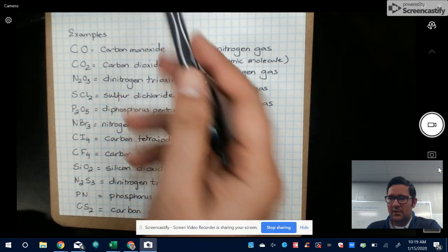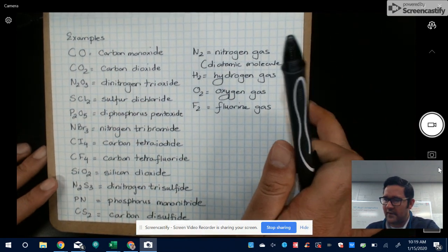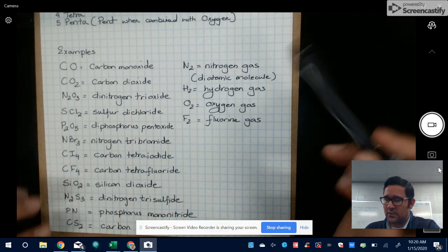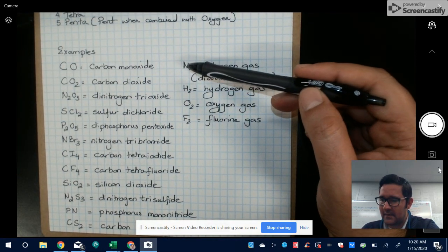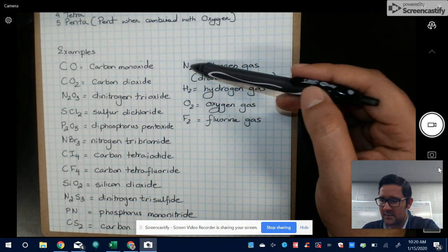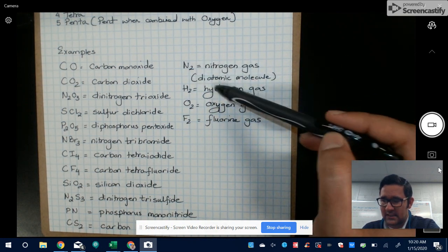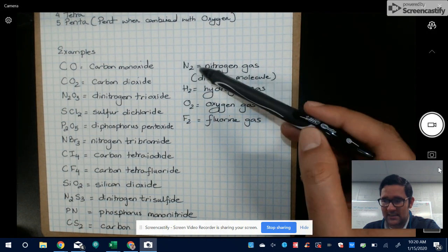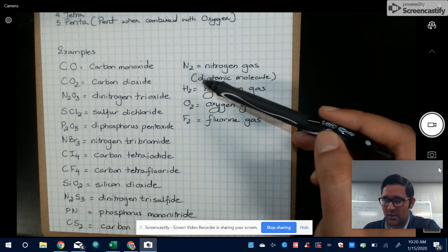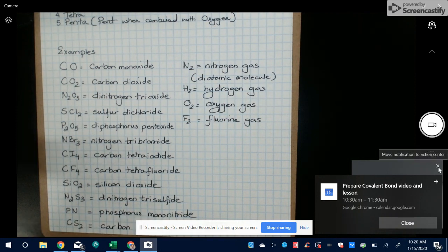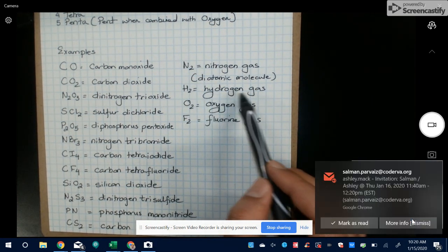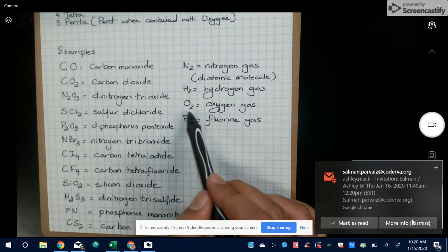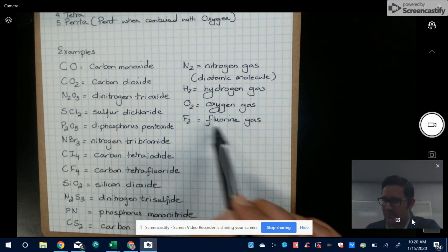So here are some examples on how to name covalent molecules. A couple other things you want to keep in mind is if you find a molecule where an element is combined with itself, that is called the diatomic molecule. And those are your gases. So N2 is a nitrogen gas. It combines with itself and creates a molecule, a covalent one. And H2 is the hydrogen gas. O2 is oxygen gas. F2 is fluorine gas.